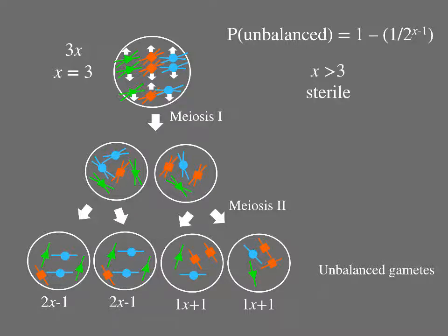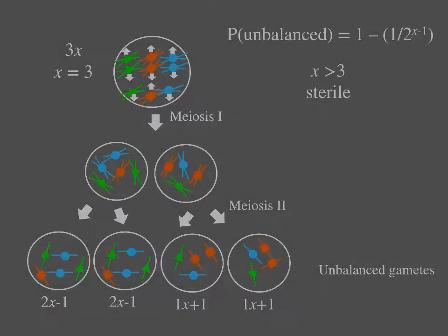When x is greater than 3, for example when x equals 4, that chance is 7 eighths. With only 1 out of 8 gametes balanced, the organism is essentially sterile.